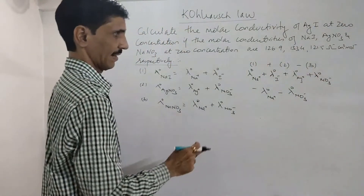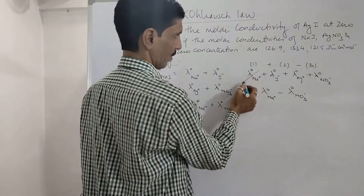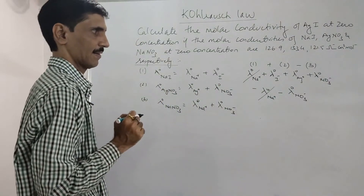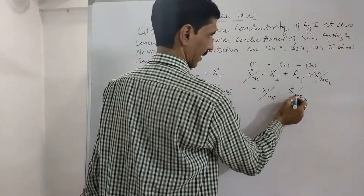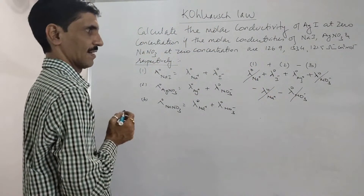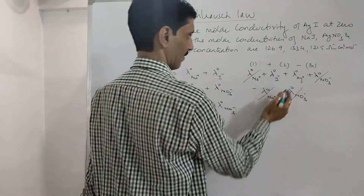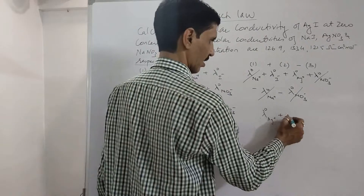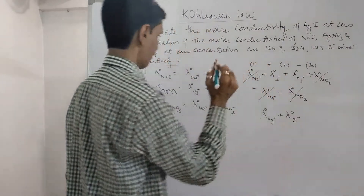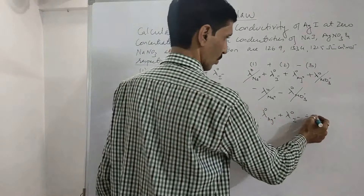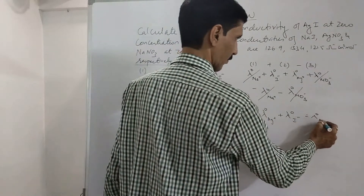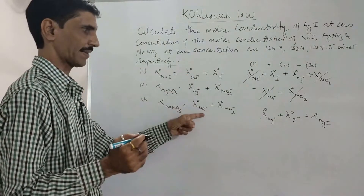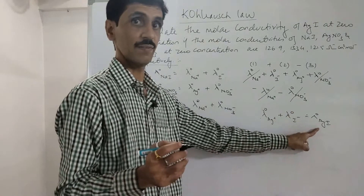What gets cancelled is λ⁰(Na⁺) with −λ⁰(Na⁺), and λ⁰(NO₃⁻) with −λ⁰(NO₃⁻). So what remains is λ⁰(Ag⁺) + λ⁰(I⁻), which of course gives you the molar conductivity of silver iodide. So adding equations 1 and 2 and subtracting equation 3, we get the molar conductivity of AgI.